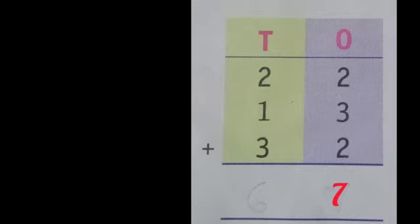Then, add the numbers in the tens column. 2 plus 1 plus 3. 2 plus 1 is 3. Then, with that 3, we should add 3. So, 3 plus 3 is 6. So, the answer is 67.